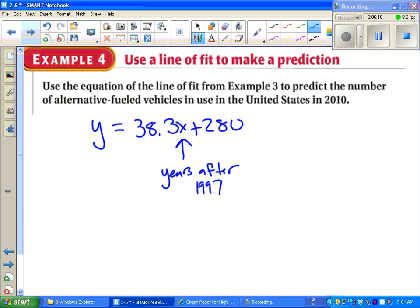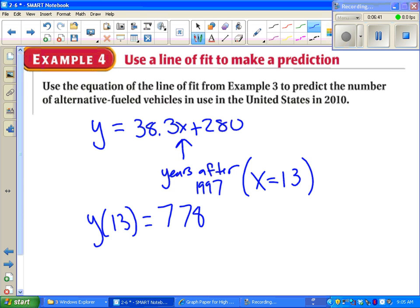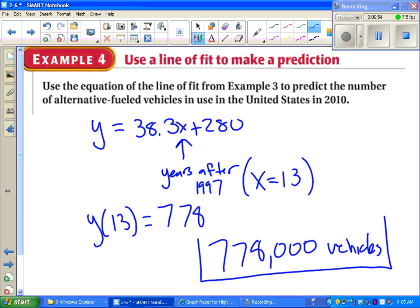In this case, since we're at 2010, that would be 13 years after 1997. So we want to find out how many alternative fueled vehicles there are in 2010. We figure out y of 13. Plug it into the equation. We're going to get 778. And if you go back and look at example three, remember that's not 778 vehicles. That's 778,000 vehicles. Because my output was in thousands of vehicles. And that's it for that one.